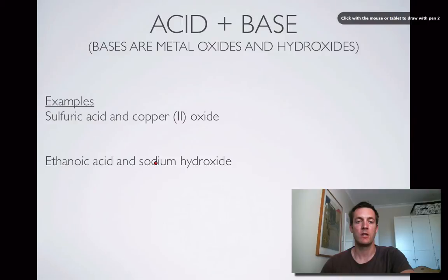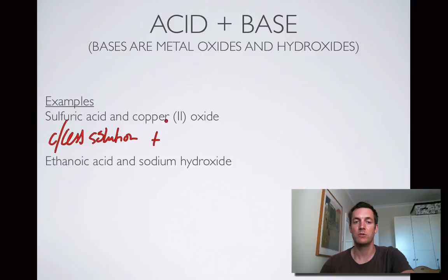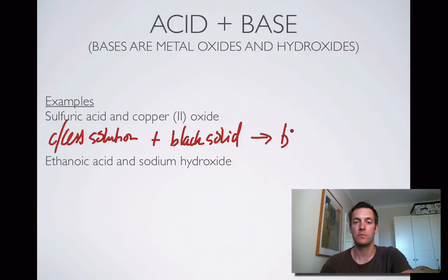Acid and base. We're starting with sulfuric acid and copper oxide — that is a colourless solution. Acid and base makes salt and water, so we're not going to get the bubbles of colourless gas this time. We can check that copper oxide: copper 2+ is a blue ion, but it's one of the exceptions on the list — this is a black solid, as you can see on the datasheet. What are we going to make? We're going to make a blue solution, because we made copper sulfate in water. So the black solid dissolves in the colourless solution to produce a blue solution.